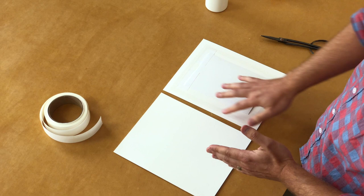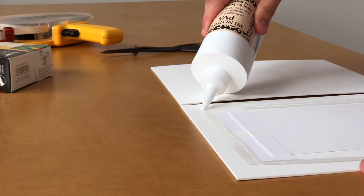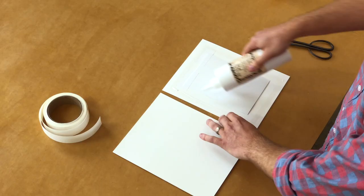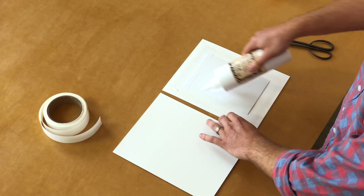So we started adding the PVA book binding glue, which is an archival glue. And this will permanently secure it so we don't have that problem of it gapping a year or two down the road. So you just do one little bead like that around. Take your back mat.